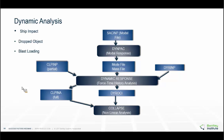The dynamic response module outputs a file which contains your inertia loads at each time increment. Once you have that, you can run it through Collapse to do your full analysis, and therefore you account for all the inertia loads for that event.